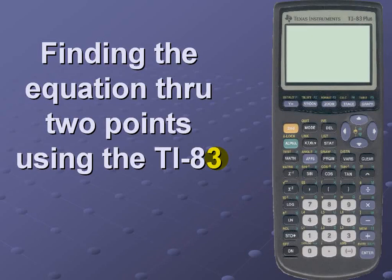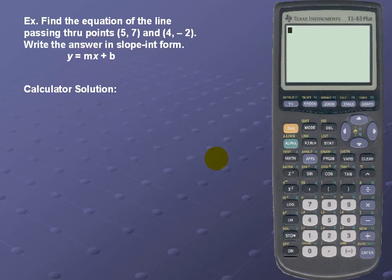Find the equation through two points using the TI-83. Example: find the equation of the line passing through points (5, 7) and (4, -2).